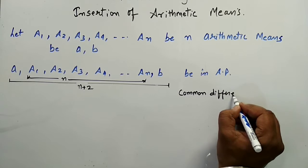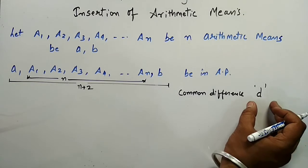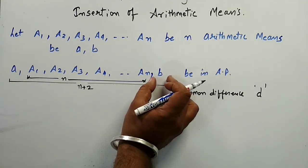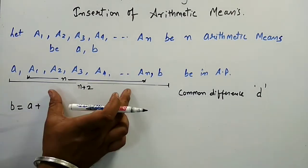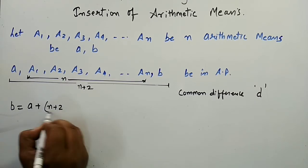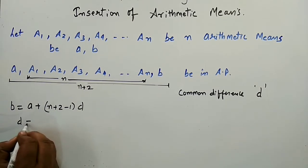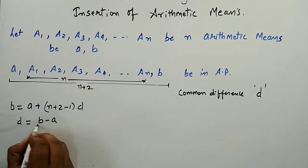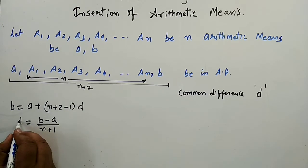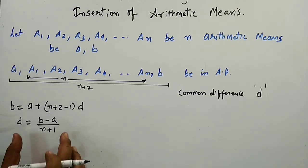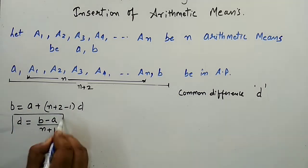First, we are going to find the common difference of this AP. Let the common difference be d. We find d using the last term: b equals a plus (n+2−1) times d. From this we directly calculate d — d would be equal to (b minus a) upon (n plus 1). Now for solving problems based on arithmetic means, first find the value of the common difference. This is very important.